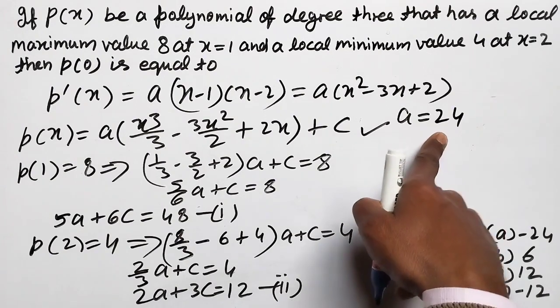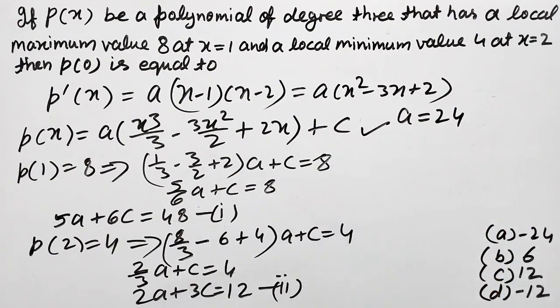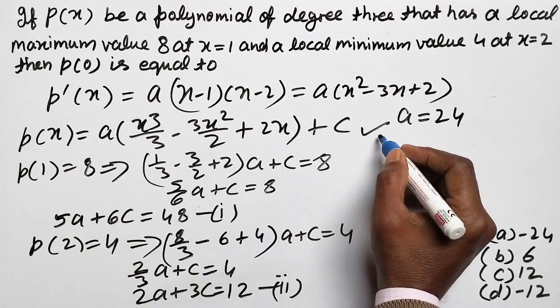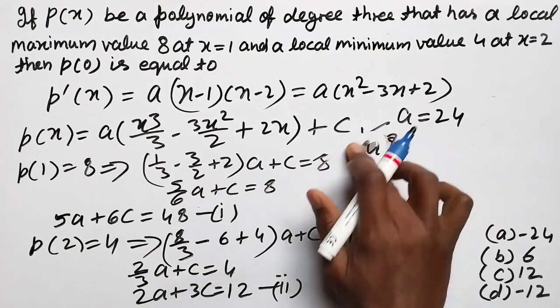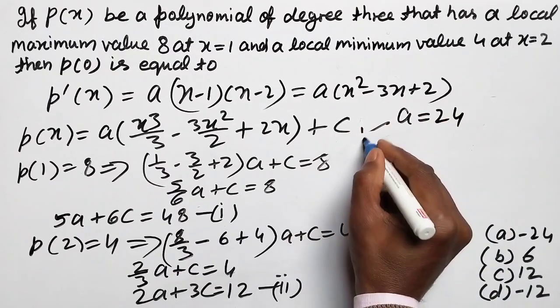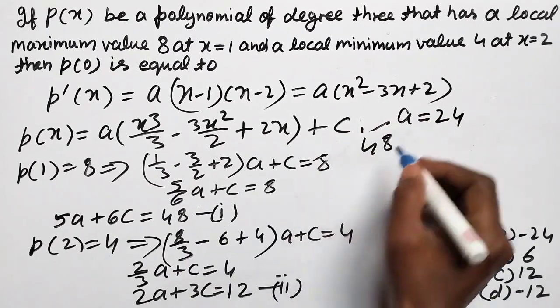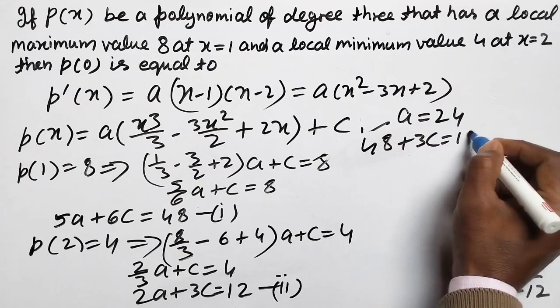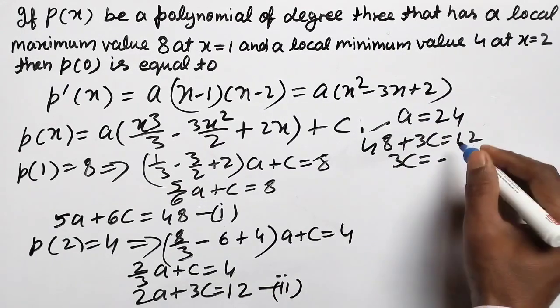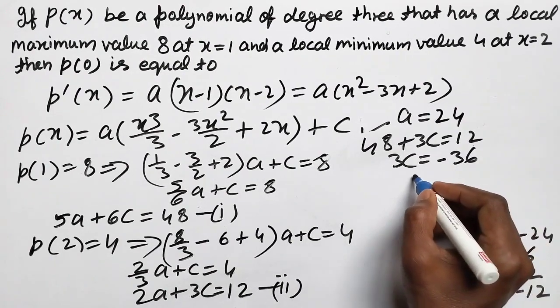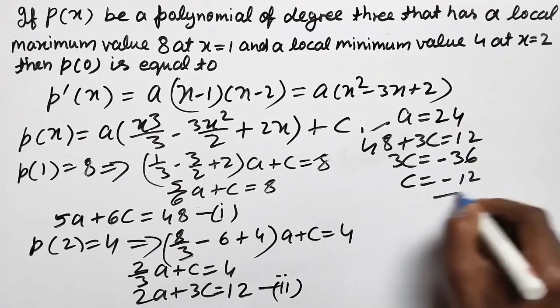And A value is 24. Put in second, so 2A means 48, and this plus 3C equal 12, 3C equal minus 36, so C equal minus 12.